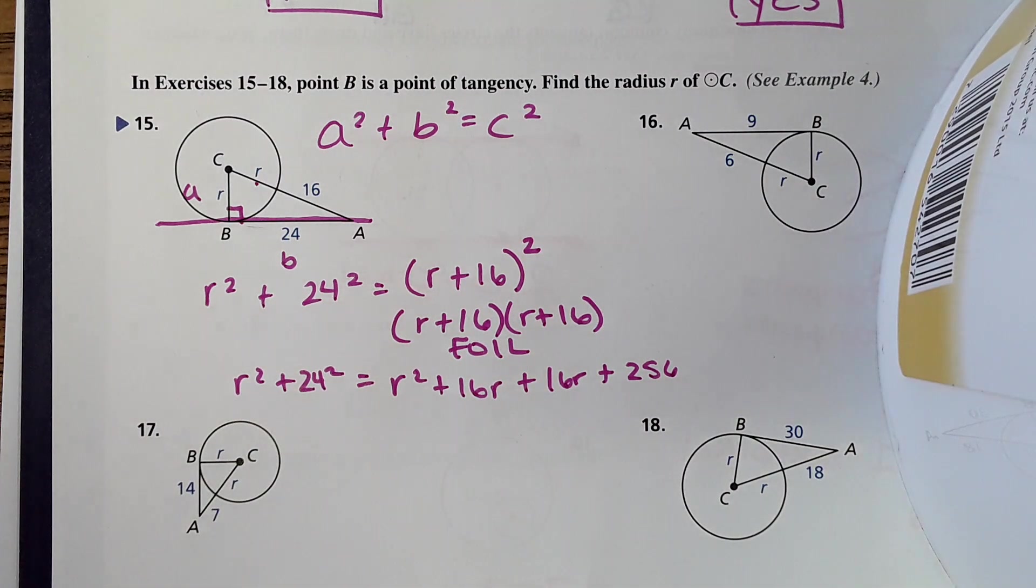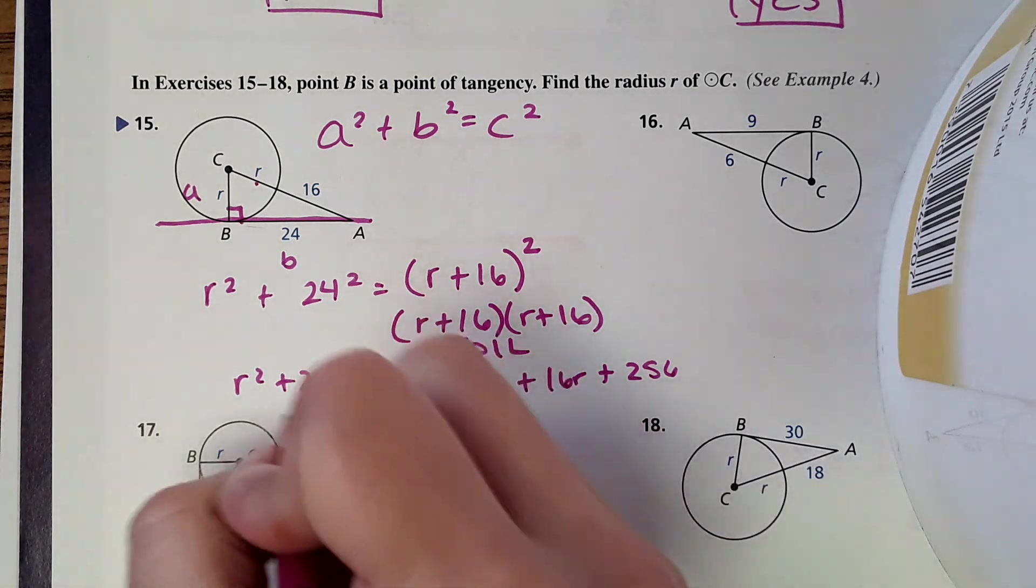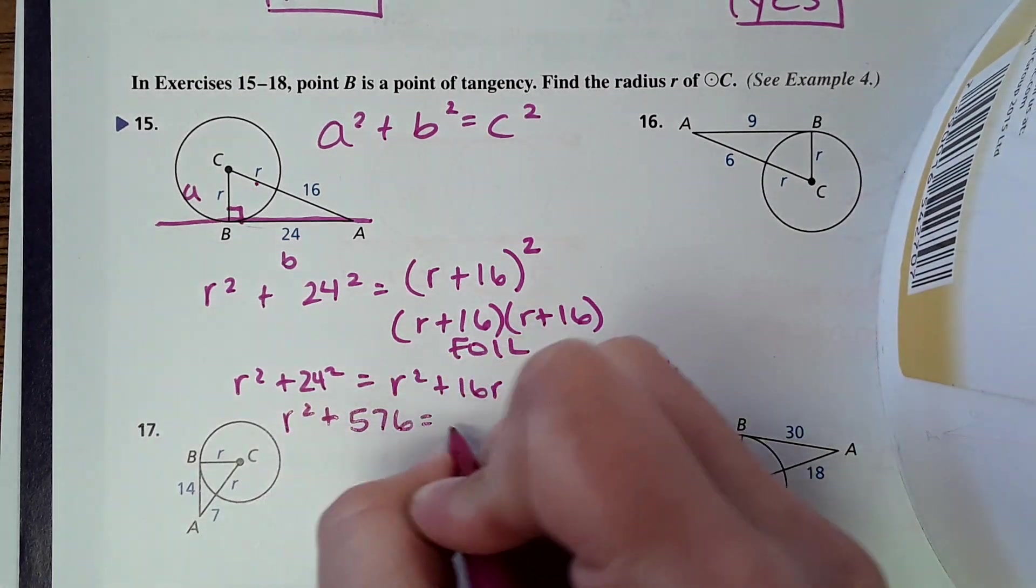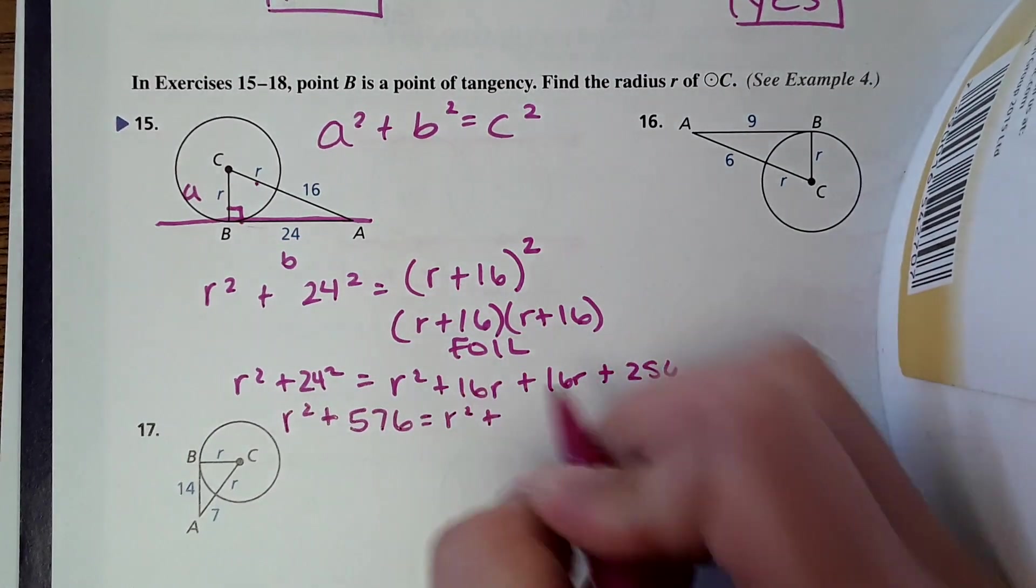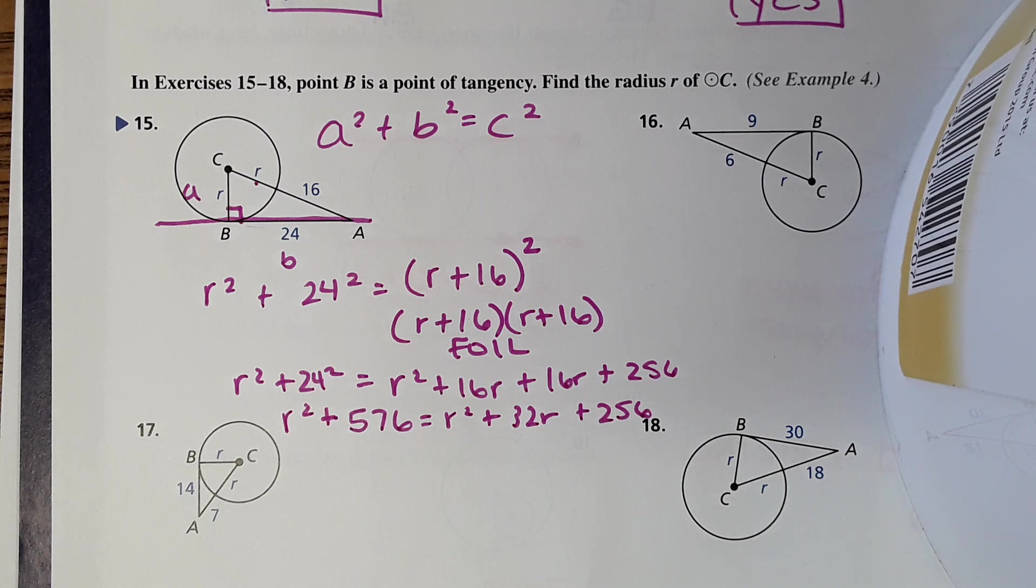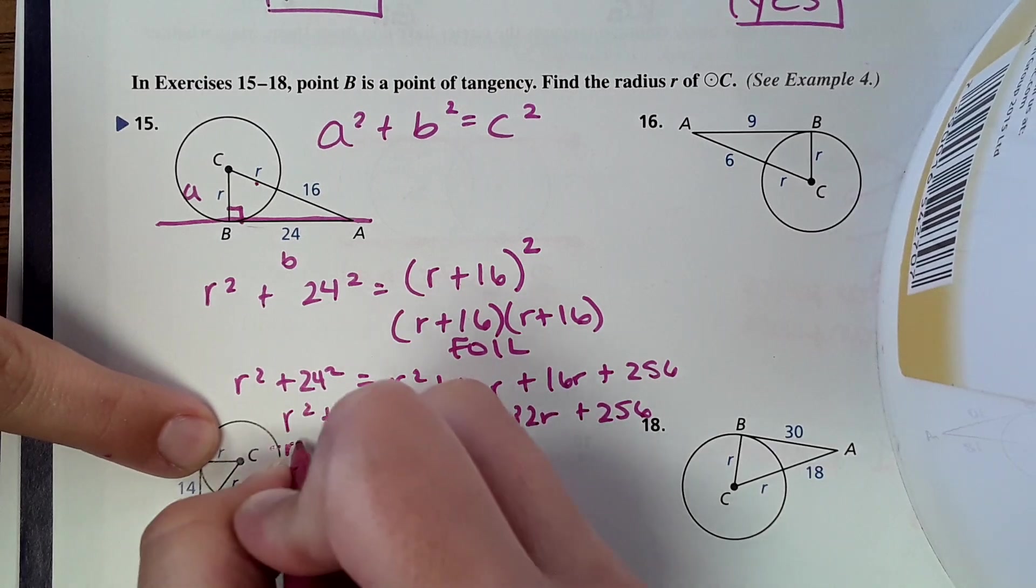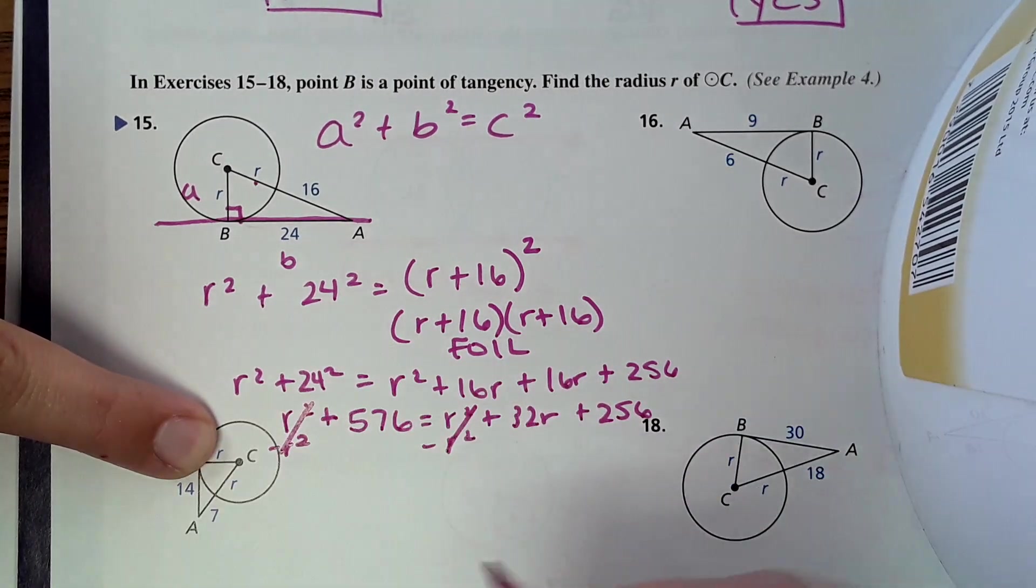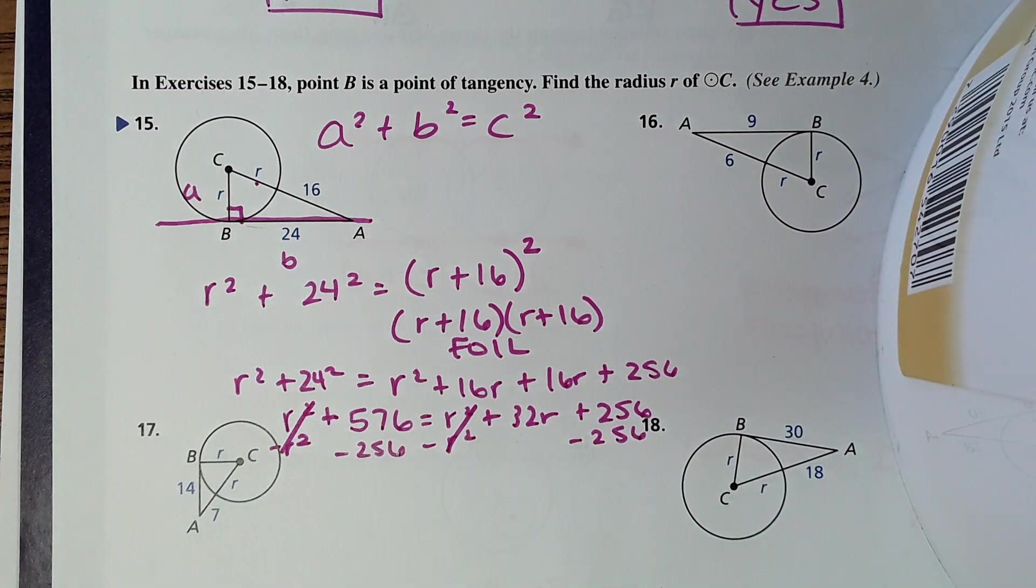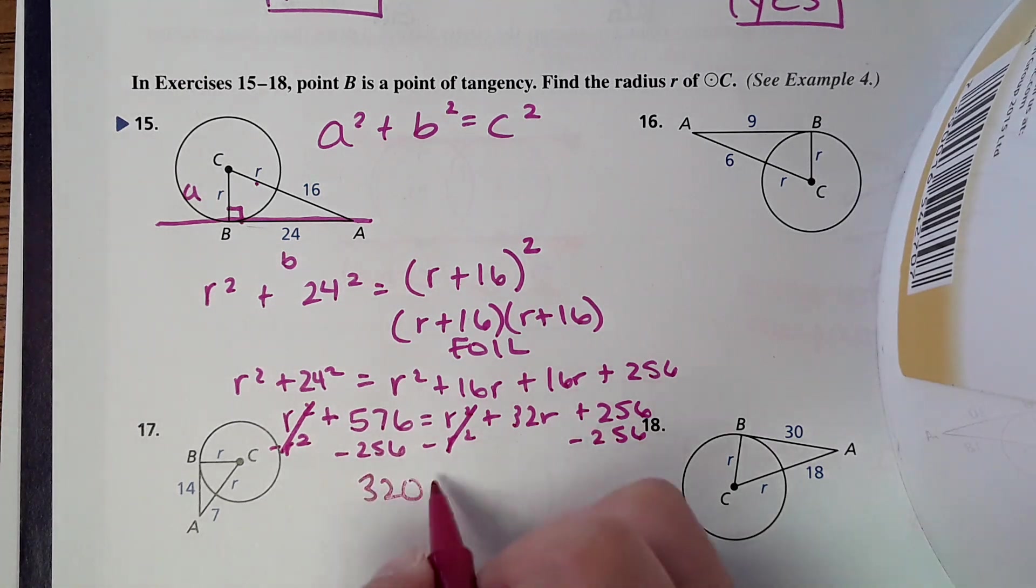And then you would just solve. So combining like terms, R squared, 24 squared is 576, 16 plus 16, 32R plus 256. And continuing, the R squares kind of cancel, which is nice. I subtract 256 from both sides. 320 and 32R. So R equals 10.